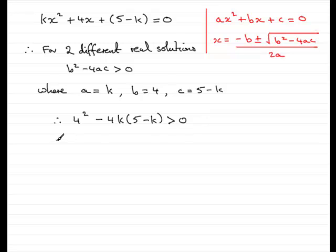Now, if we expand this, we've got 4 squared, which is 16, and then we've got minus 20k here, plus 4k squared, and that's greater than 0.